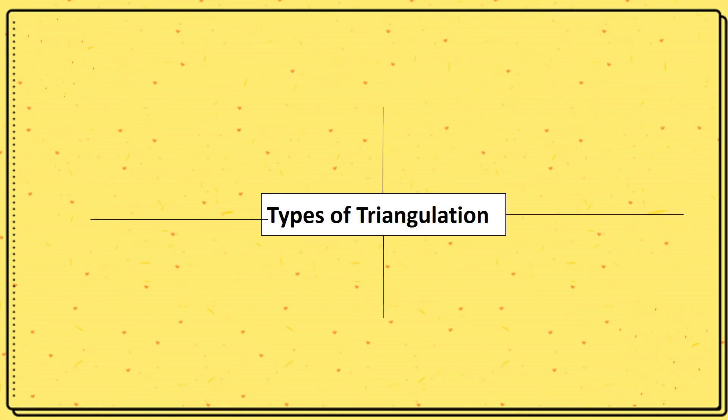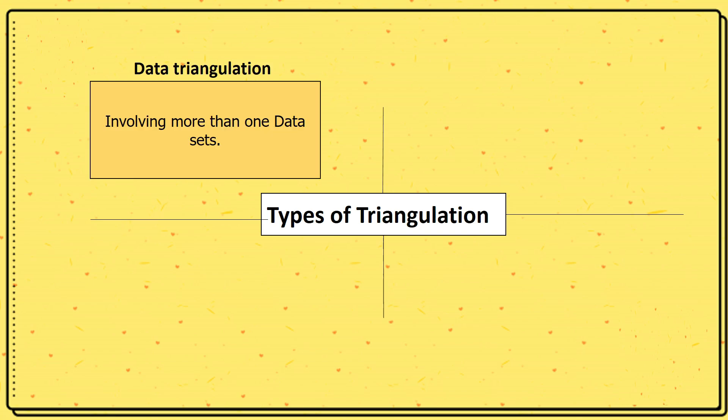Types of triangulation. There are four types of triangulation used in research. First one is data triangulation, that type of triangulation which involves more than one dataset. The second type is methodological triangulation, which involves the usage of more than one method, for example, the qualitative and the quantitative methods.